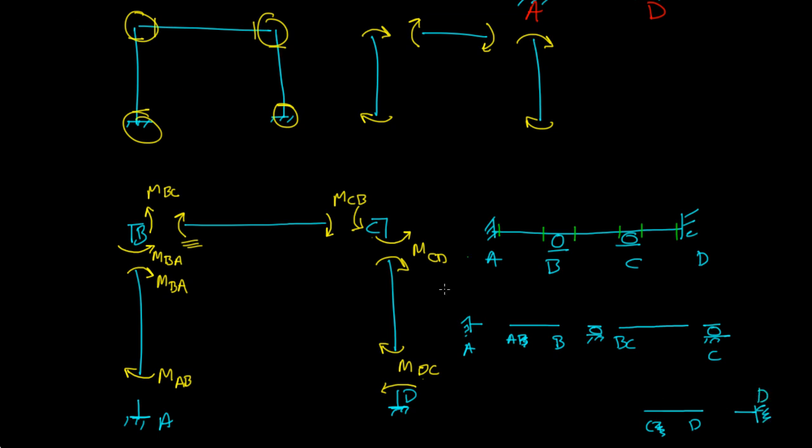Here, your sign convention for members are always clockwise. So clockwise, clockwise, clockwise, clockwise, clockwise, clockwise. And for the joints, here it's equal and opposite, right? This is clockwise. This is counterclockwise. Same thing at the joints. You have B going this way, so that means the moment here is going to go that way. Same thing for here. Equal and opposite.